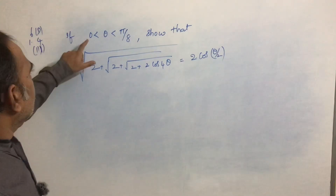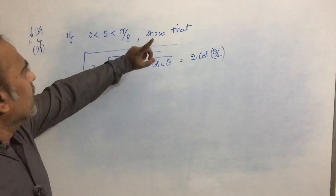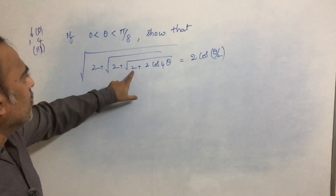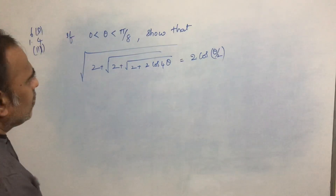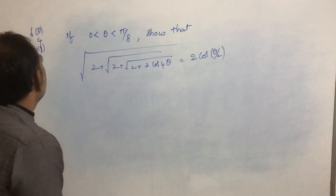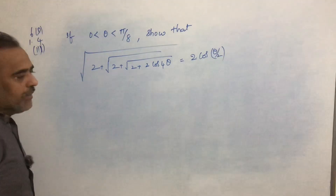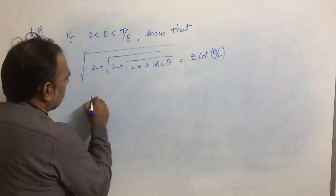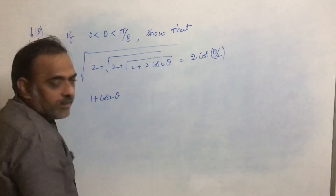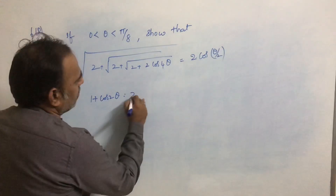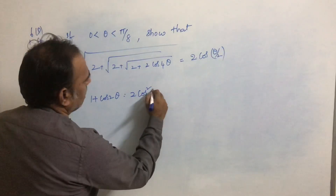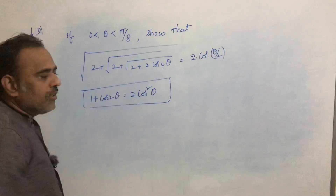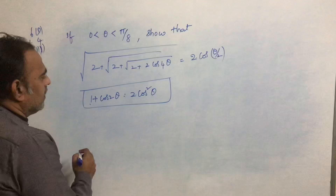Our next problem: if 0 < θ < 5π/8, show that √(2 + √(2 + √(2 + 2cos4θ))) = 2cos(θ/2). This problem is in exercise 6D, problem 1.43. To solve this problem we should know the formula: 1 + cos2θ = 2cos²θ. If you don't remember this formula, it is difficult to solve this problem.